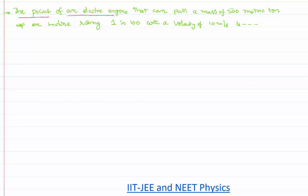an electric engine that can pull a mass of 500 metric ton up on an inclined plane rising 1 in 100 with a velocity of 10 meter per second is how much. So let us try visualizing what has